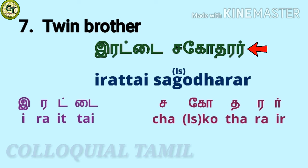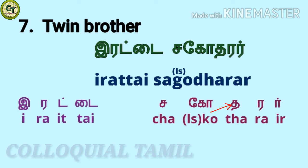For twin brother: iratai sagodharar. For 'iratai', just remove the last four letters from 'iratai ergal'. For 'sagodharar': 'ch' a short letter — while speaking, 'ch' may also sound as 'ca'; 'ko' a long vowel — while speaking, 'ko' may also sound as 'go'; short letter — may also sound as 'the' in some words; 'r' a short letter, 'ir' a consonant — together: sagodharar. Iratai sagodharar.